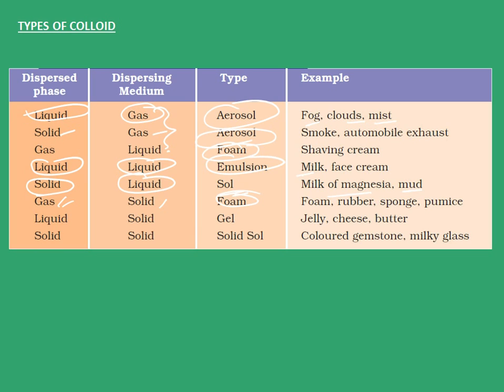When the dispersing medium is solid and the dispersed phase is liquid, it is called gel — examples include jelly, cheese, and butter. When the dispersing medium is solid and the dispersed phase is also solid, it is called a solid sol — examples of which are colored gemstone and milky glass. With this, we come to the end of the first video of this chapter. Thank you.